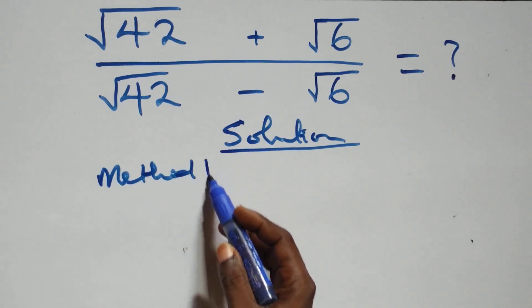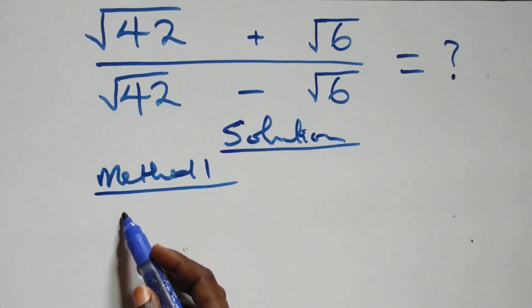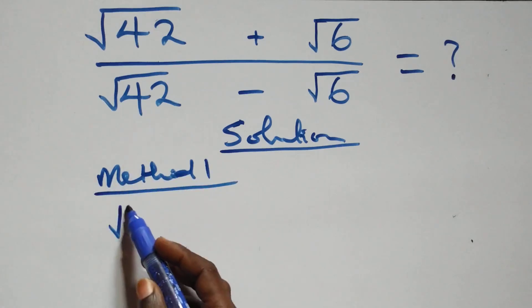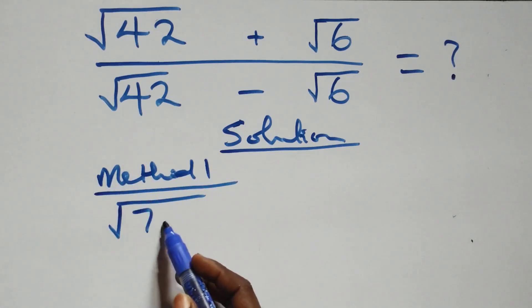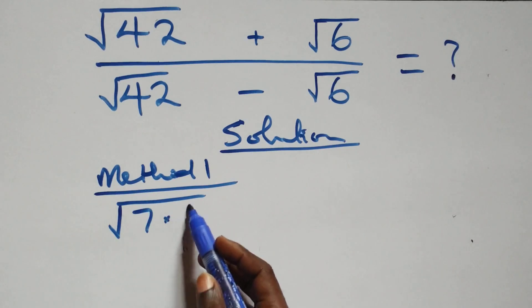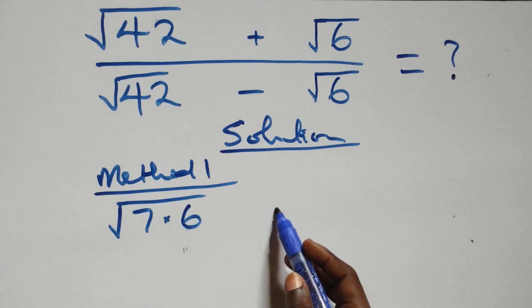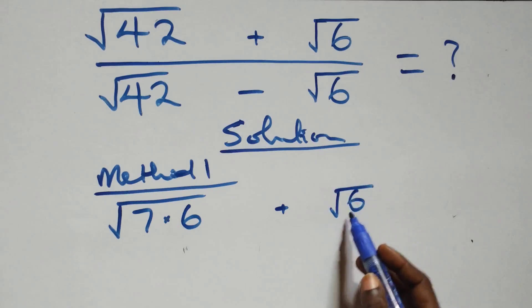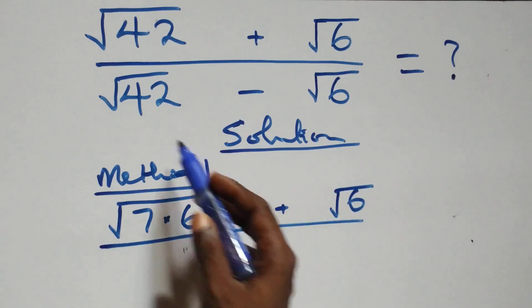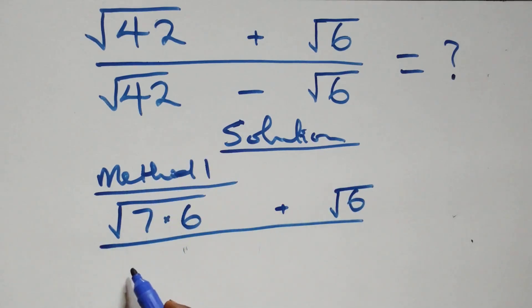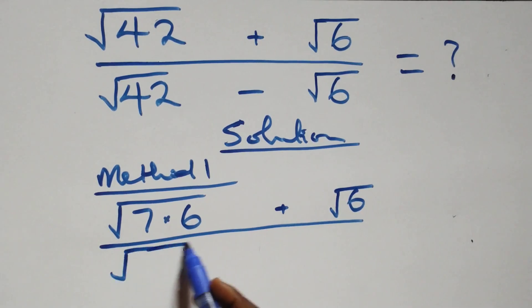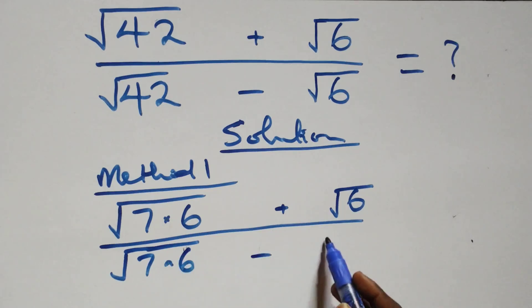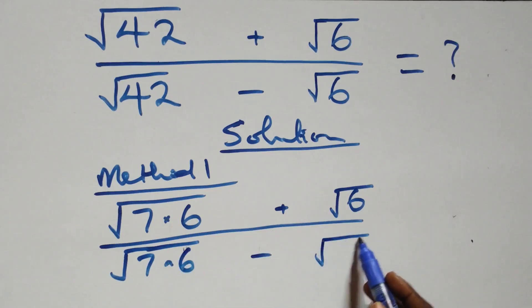In Method 1, we rewrite the expression. The numerator becomes √(7×6) + √6, and the denominator is √(7×6) − √6.